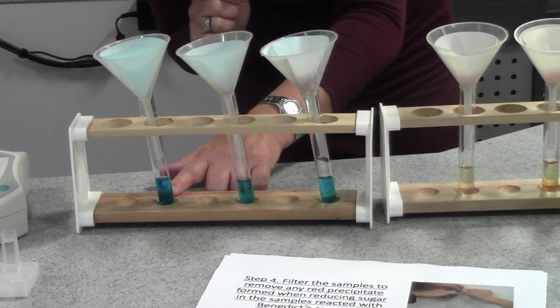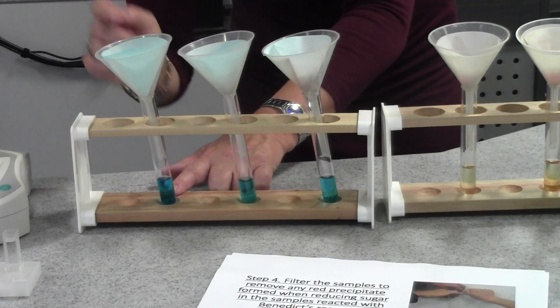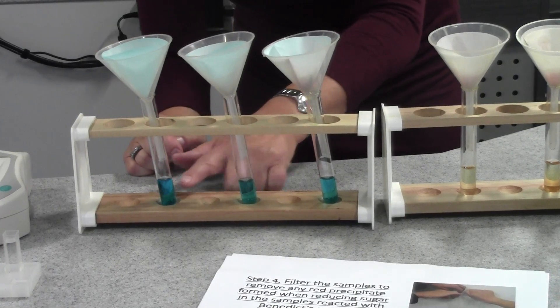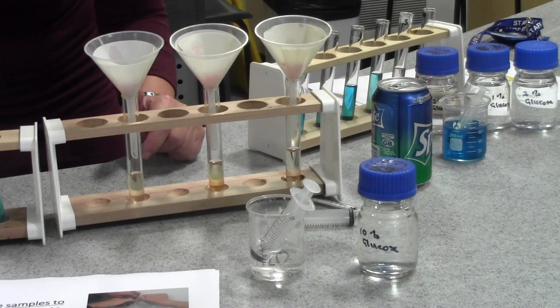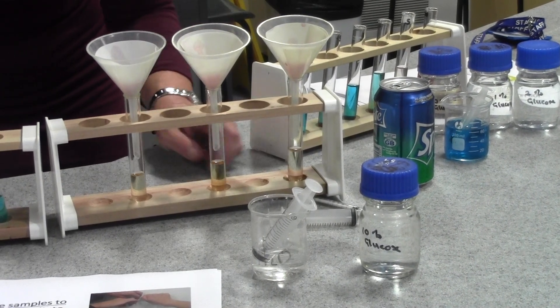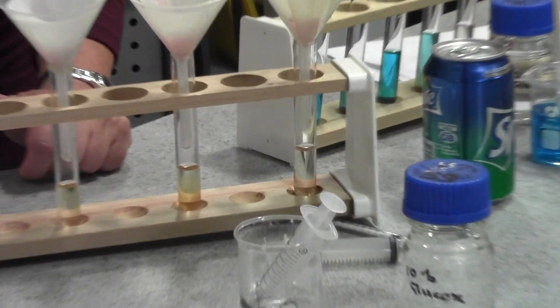That's obviously the Benedict's has not been used up because there was no glucose to react with right the way through to the other end where all of the Benedict's reagent has reacted with the glucose to produce precipitate and so we've got no blueness left.